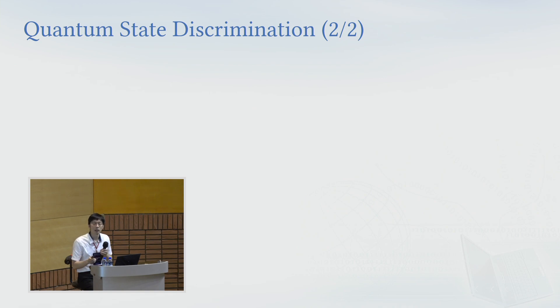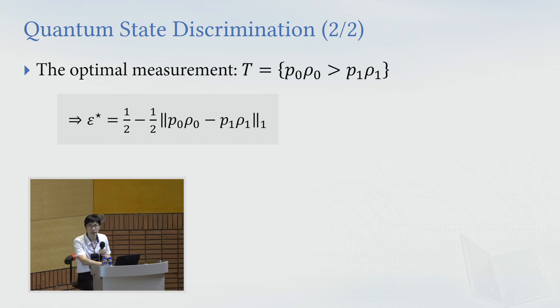They show that the optimal test is given by the orthogonal projection onto the positive part of T0 times rho zero minus T1 times rho one. So they got this nice formula for binary hypothesis testing.